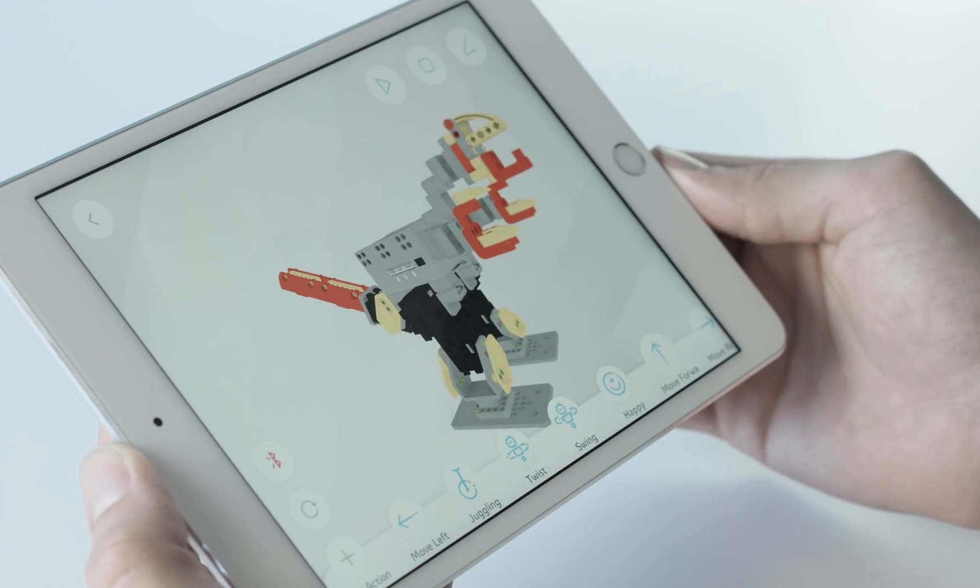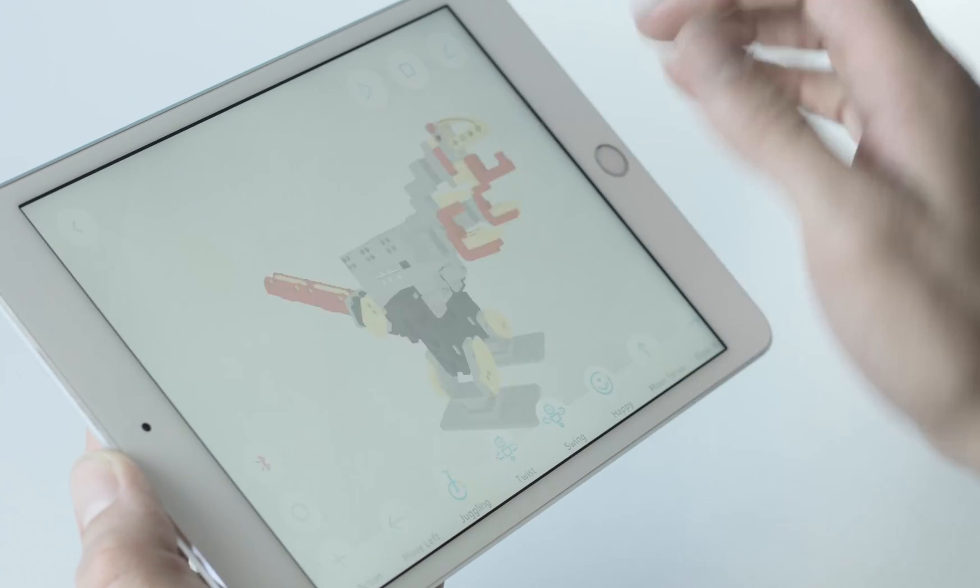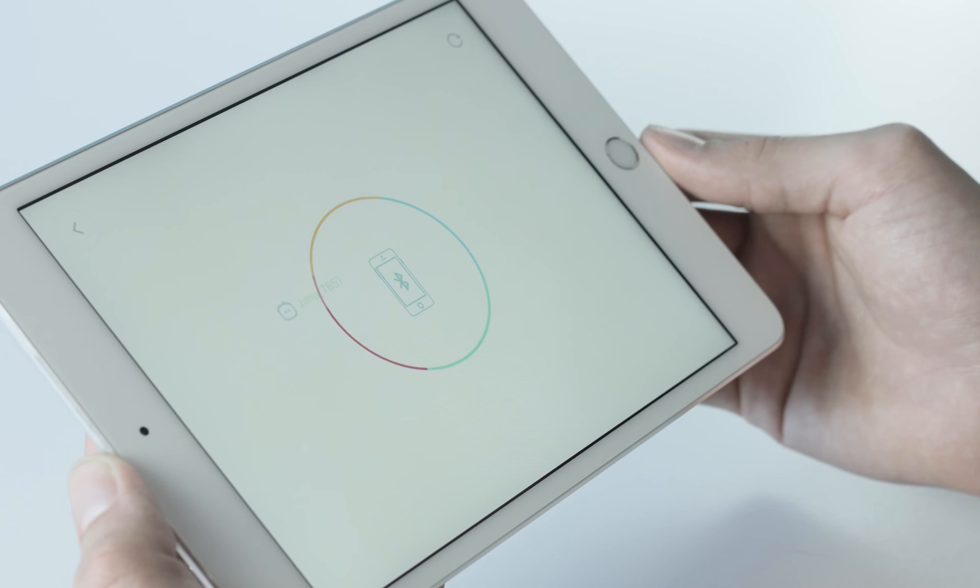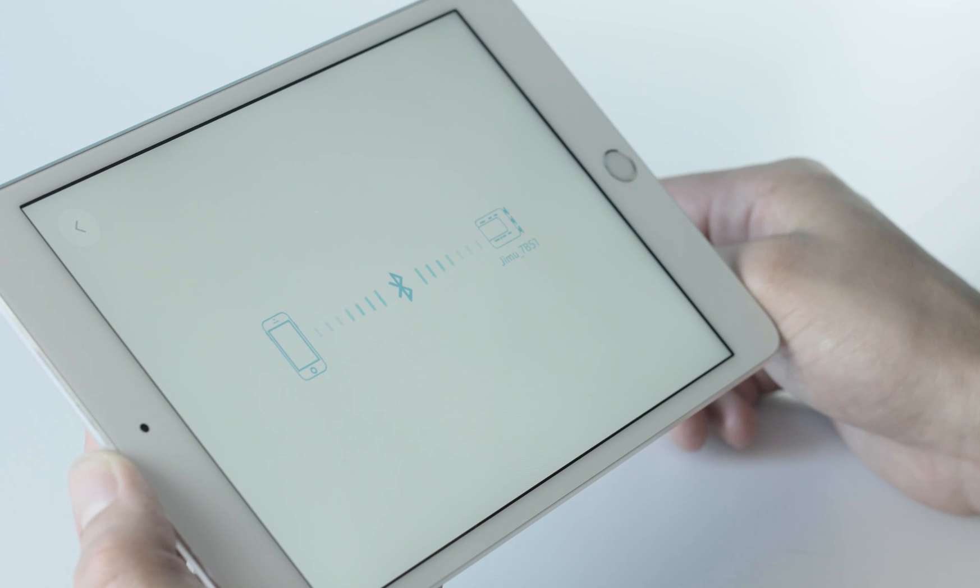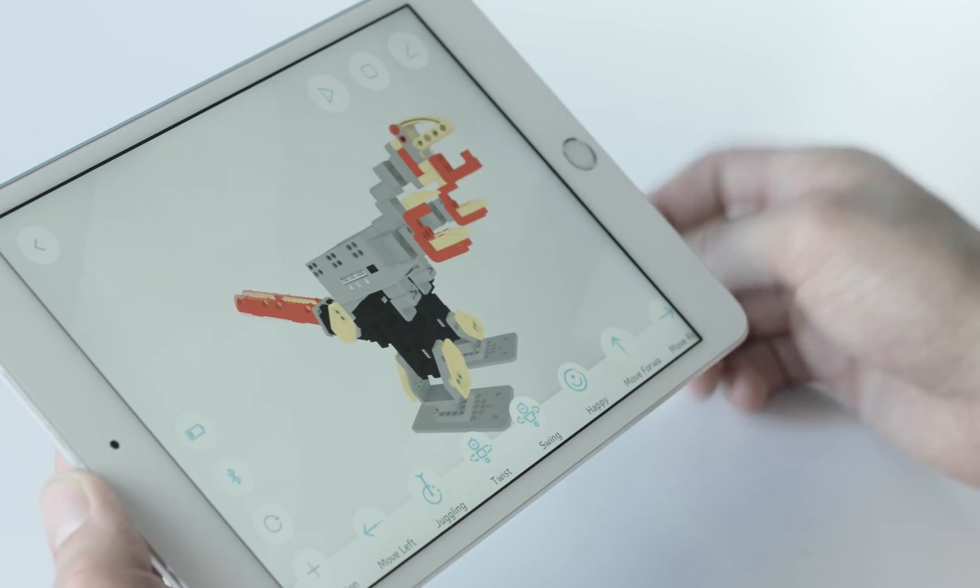Select the red Bluetooth icon to the left of your model to begin pairing your smart device to your robot. Then select the Jimu button that appears. A connection diagram will confirm all has been done correctly and you're ready.